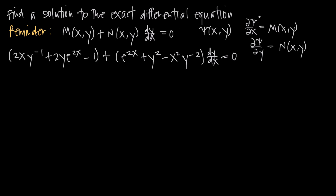The test we're going to use comes from the facts that the partial derivative of psi with respect to x must equal M, and the partial derivative of psi with respect to y must equal N. We can rewrite these as psi_x and psi_y. Now, if we assume psi(x,y) is a continuous function, then we know its mixed second-order partial derivatives are equal to each other — that is, the partial derivative of psi first with respect to x then y equals the partial derivative first with respect to y then x.